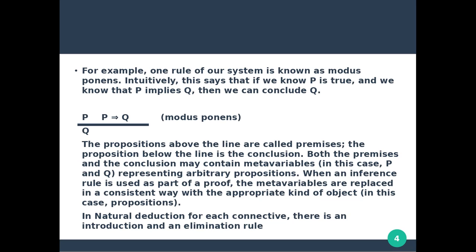In natural deduction, for each connective there is an introduction and an elimination rule. This is an important point. We have to perform two operations in natural deduction: introduction and elimination. These two rules — introduction and elimination — apply to the connectives such as conjunction and disjunction.